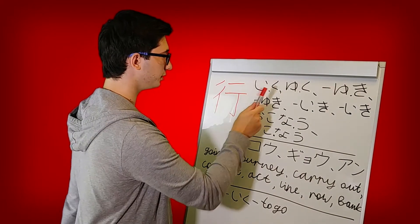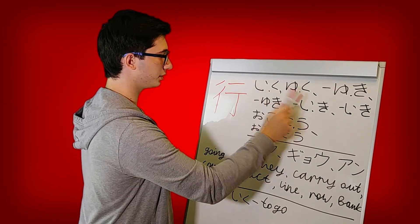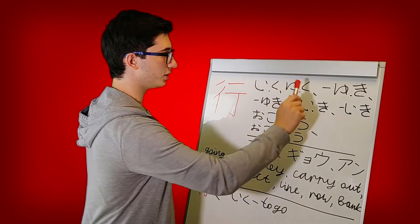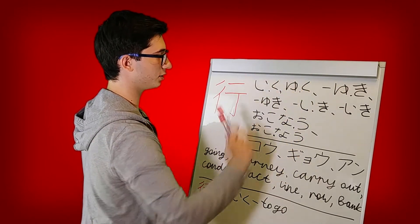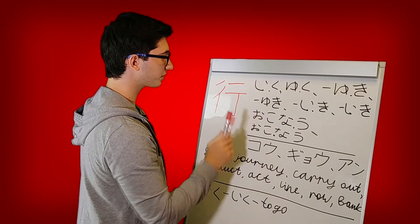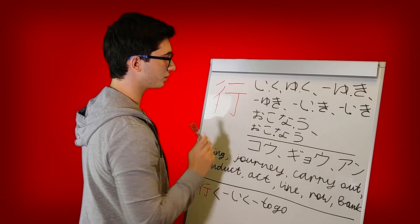So the kunyomi are iku, the ku goes outside, yuku, the ku goes outside, yuki, the ki goes outside and this is a continuation. Yuki, everything stays inside and this is also a continuation.